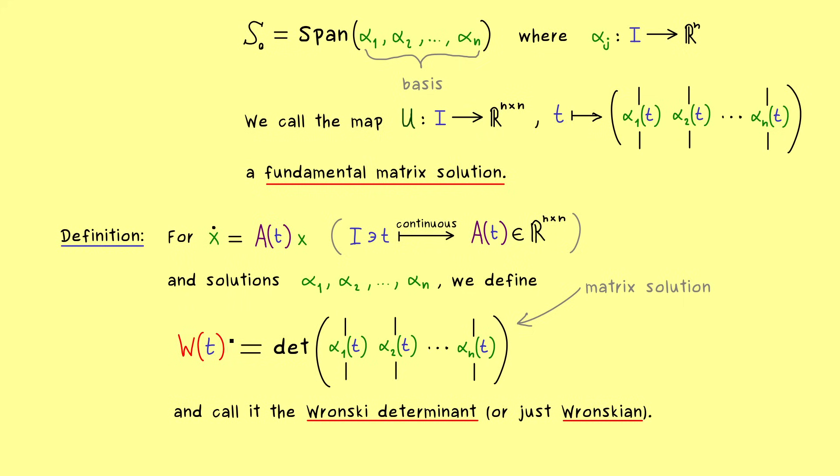Hence, if the Wronskian determinant is non-vanishing at one point, we have a fundamental matrix solution.